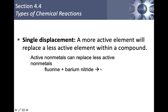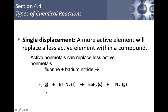The last single displacement rule: active nonmetals can replace less active nonmetals. The most active nonmetal is fluorine. For example, fluorine gas (F₂, diatomic) plus barium nitride (Ba₃N₂): fluorine pushes nitrogen out, producing barium fluoride (BaF₂) and nitrogen gas (N₂). Remember to crisscross charges for ionic compounds. The equation is already balanced as written.